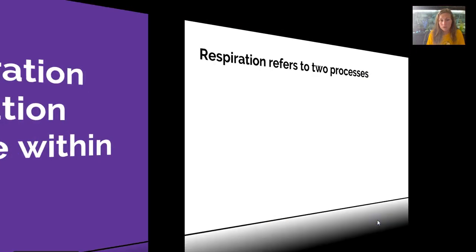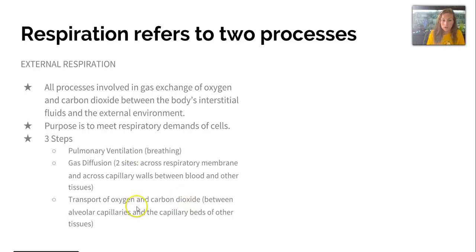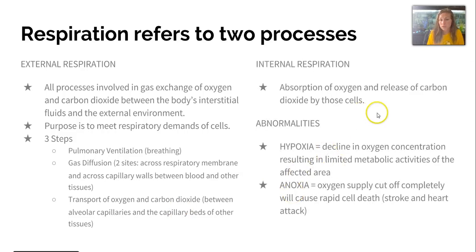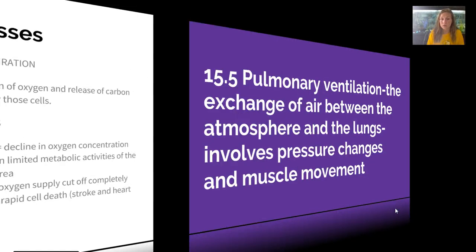In 15-4, we cover external and internal respiration. External respiration involves all processes of gas exchange of oxygen and carbon dioxide between the body's interstitial fluids and the external environment, including three steps: pulmonary ventilation or breathing, gas diffusion at two sites, and transport of oxygen and carbon dioxide between the alveolar capillaries and capillary beds of other tissues. Internal respiration is the absorption of oxygen and release of carbon dioxide by the cells. Abnormalities include hypoxia — a decline in oxygen concentration that limits metabolic activity — and anoxia, a complete cutoff of oxygen causing rapid cell death, typically seen in strokes and heart attacks.